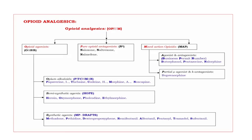Here we discuss both agonists and antagonists. When we come to the classification, these are divided into three types. One mnemonic is given: OPM, where the bold letters are O, P, M. O — opioid agonists. P — pure opioid antagonists. M — mixed actions of opioids.